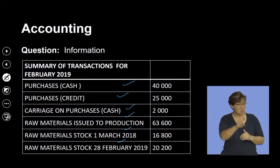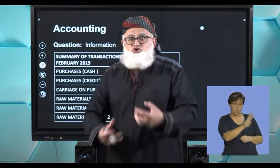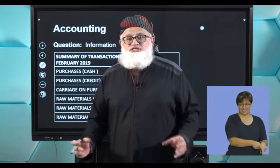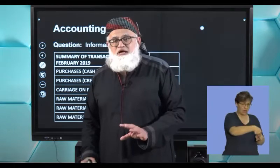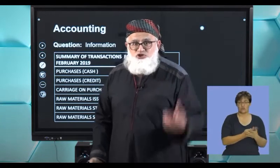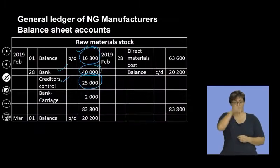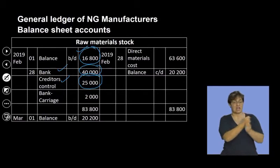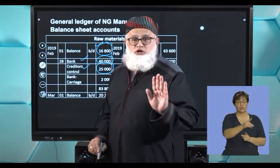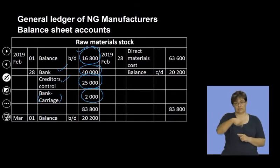All costs incurred in bringing the raw materials to our place of manufacture, to where our factory is situated, would form part and parcel of the cost of my raw materials. We paid carriage to transfer the goods into my factory — carriage on purchases, 2,000 rand. It was paid for in cash, so you debit your raw materials and credit bank. The 2,000 rand entry for carriage is recorded in brackets to indicate it was carriage paid.